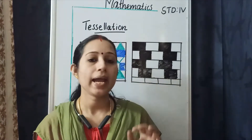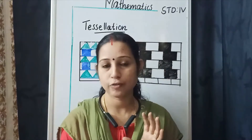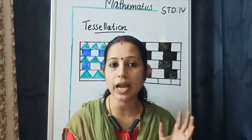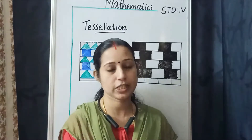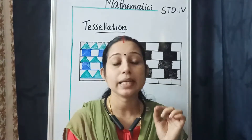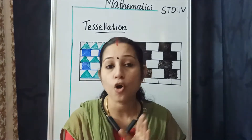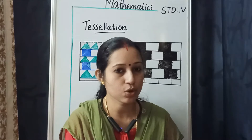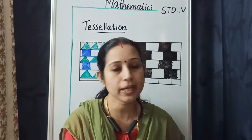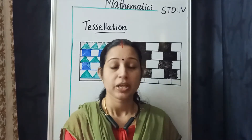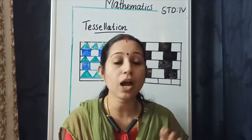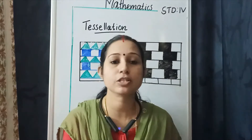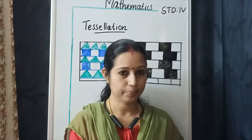There are two types of line of reflection: vertical line of reflection and horizontal line of reflection. The image formed by the vertical line of reflection is called the mirror image. The image formed by the horizontal line of reflection is called the water image.